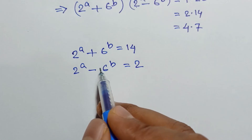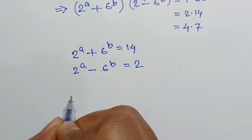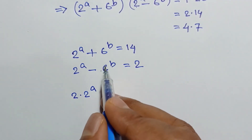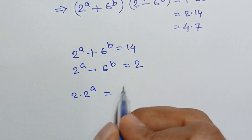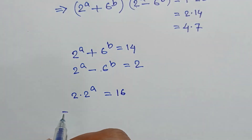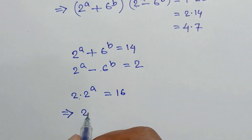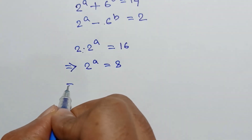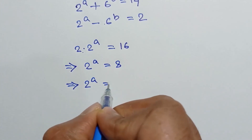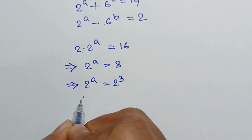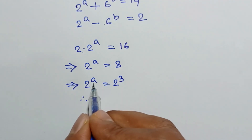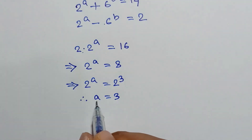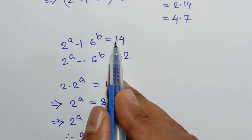Adding the two equations, the 6^b terms cancel out, giving 2 times 2^a equals 16. Dividing both sides by 2, we get 2^a equals 8, which is 2^a equals 2 to the power 3. Since the bases are the same, the powers must be equal, so a equals 3.